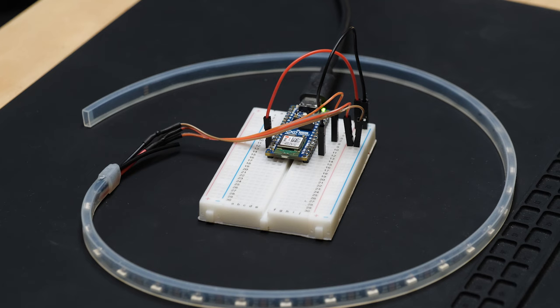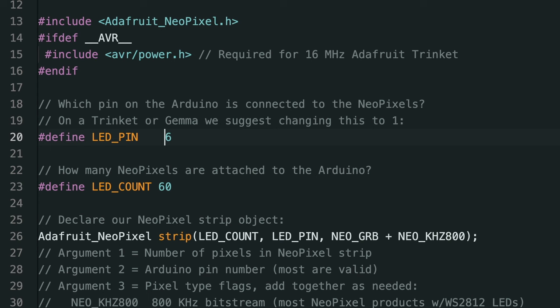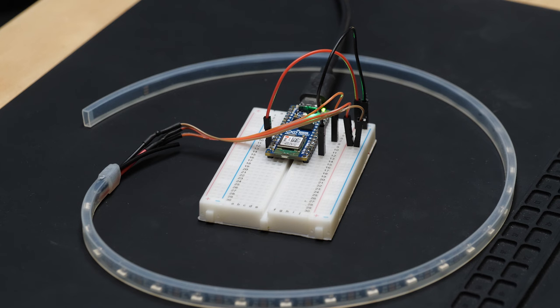Connect your pixel strip to power, ground, and a data output. Then make sure your Arduino code references that same output pin. If all goes well, you'll see the pixels light up.